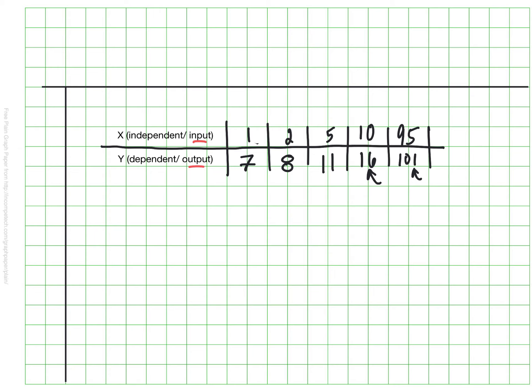In each one of these, it looks like I am adding six from my input to my output. So if that's what's happening every single time, then that is my rule. So I can write that rule by saying my X value plus six is what gives me my Y value. This is a rule that I wrote based on that table.